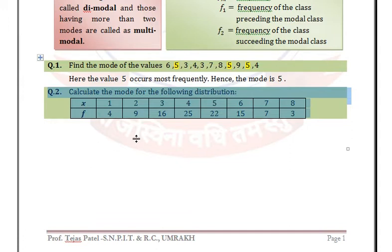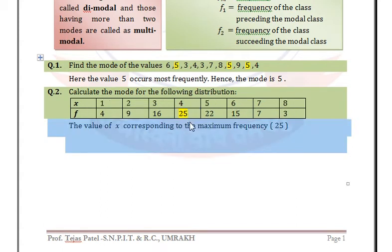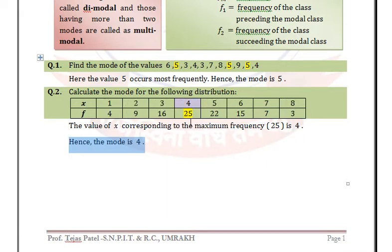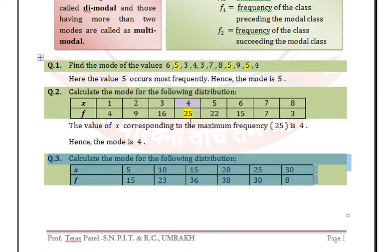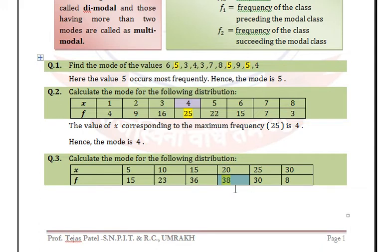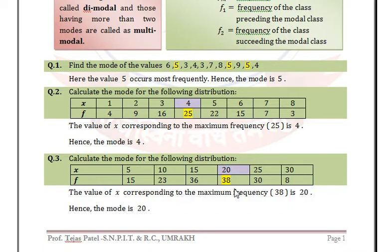For ungrouped frequency distribution data, we need to find the maximum frequency. We can see that the maximum frequency is 25, and the corresponding value of x is 4, so mode is 4. In one more example, the maximum frequency is 38 and the value of x corresponding to 38 is 20, so mode is equal to 20.